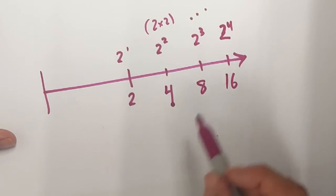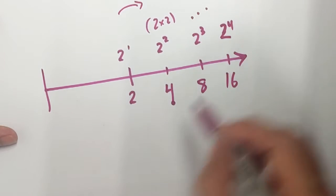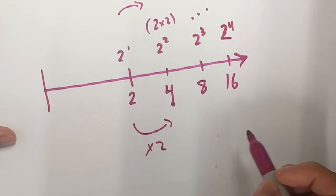If we look at the pattern here, each time my exponent pluses 1, what happens to the bottom here? Well, it doubles, doesn't it?